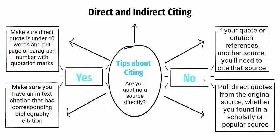If your quote or citation references another source, you'll need to cite that source — that is called an indirect citation. Ideally, you're going to pull direct quotes from the original source, whether you found it in a scholarly or popular source. So if you see a peer-reviewed article cited on a website, for example, you would need to cite the peer-reviewed article, not the website.